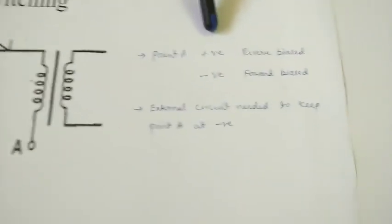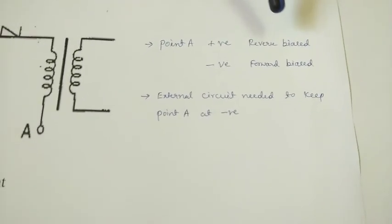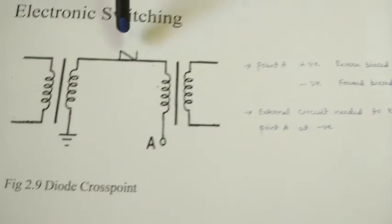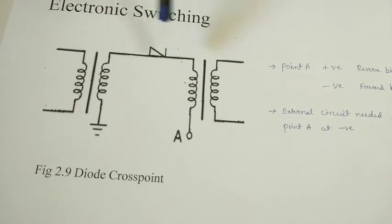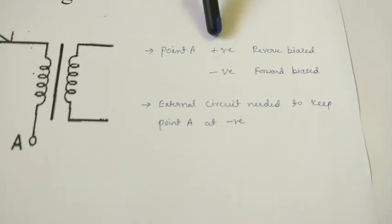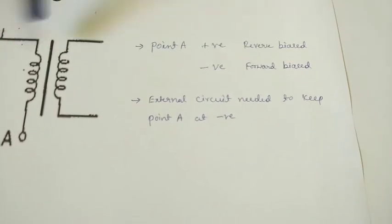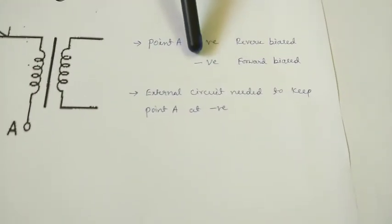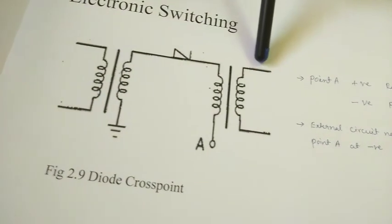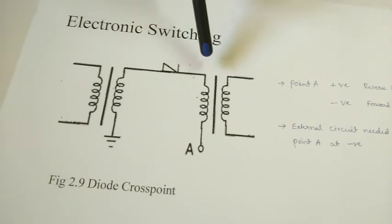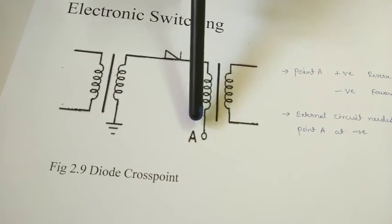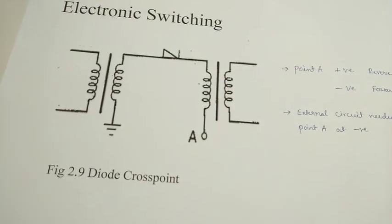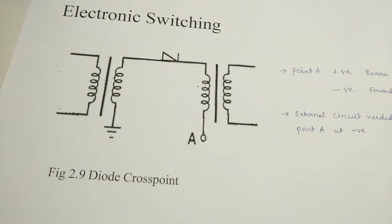If point A is positive, the diode will be reverse biased. Forward bias means it conducts; reverse bias means it doesn't conduct, so it will be disconnected from the communication system. If point A is negative, it is forward biased, meaning one line is connected to the other. So if you want to connect one line to another, you need to maintain point A at negative by using an external circuit to keep point A negative.